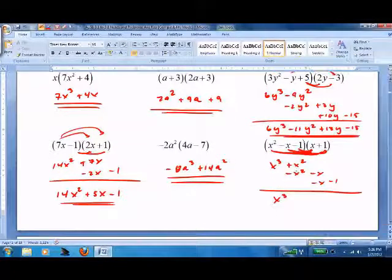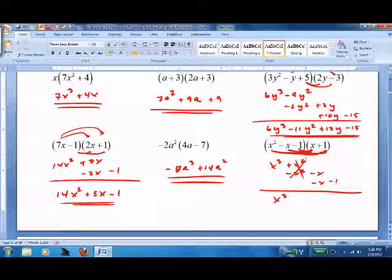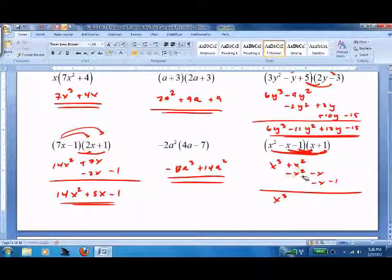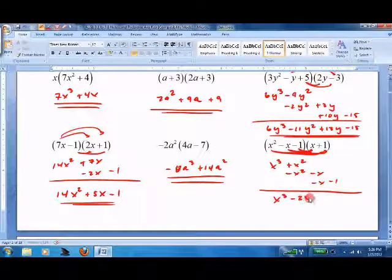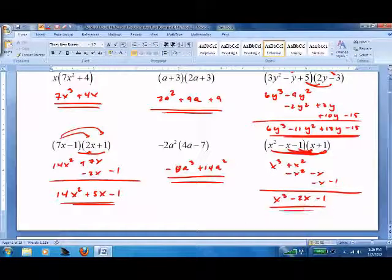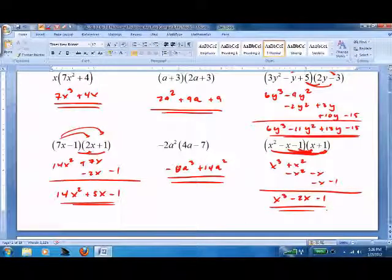Notice on this last one, these two cancel out - positive x squared minus x squared is zero. That's it. Lots and lots of practice on this. Have to get good at it fast. It's just a tool you use when you do bigger, more complicated problems later. Make sure you get these right. Good luck.